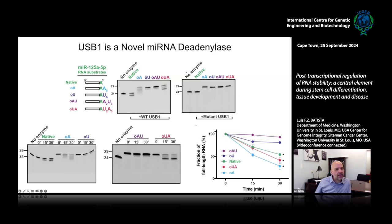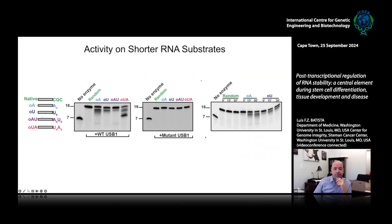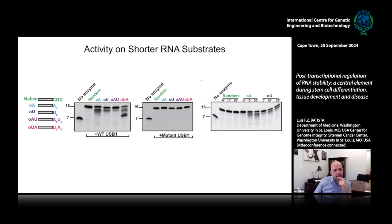The deadenylation activity of USB1 is pretty specific for A-tails. Using a very small RNA substrate of only seven nucleotides plus the tail, we see that whenever it ends in A's, we have significant deadenylation with wild type USB1 and no deadenylation at all with patient mutants. Something interesting we're still trying to understand is that USB1 is able to remove one uridine out of RNA tails and then stops; if there's another A it keeps going — so it removes one U at a time, but as many A's as there are.